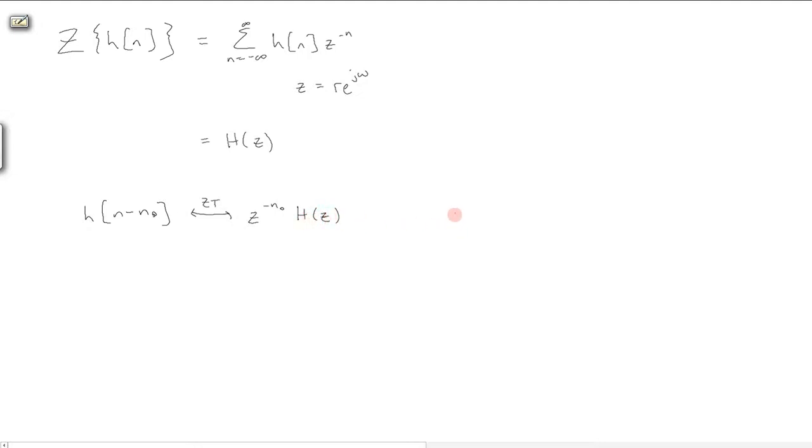As a specific example, suppose we have Y of N minus 3. That corresponds to Z to the minus 3 times Y of Z. This is very useful because it will help us to deal with difference equations.